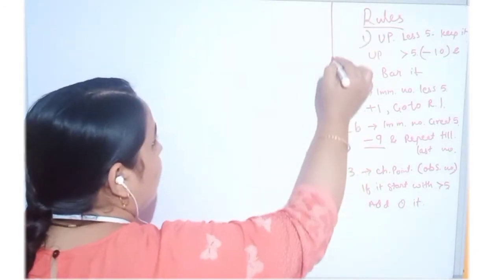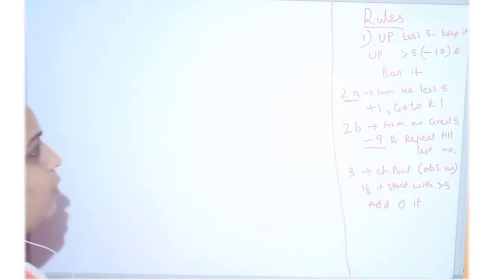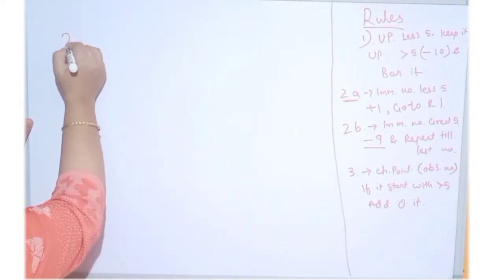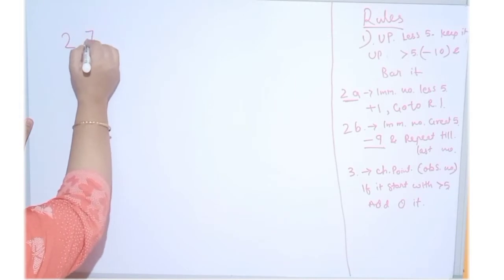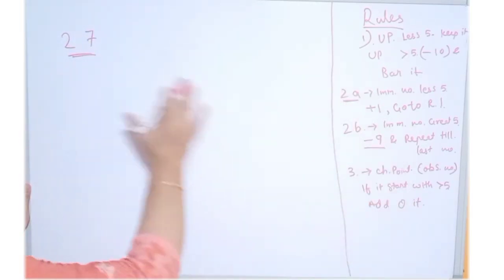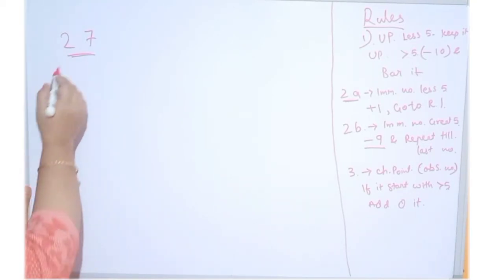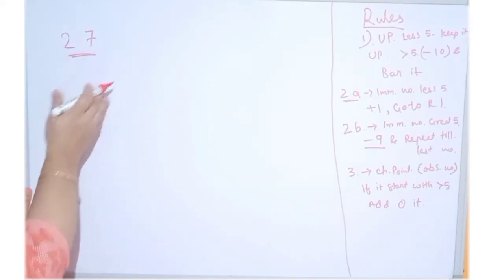I hope these rules are clear to you. Now we will understand how to convert and what benefits we get. This is the normal number. We will implement this formula and understand how this affects. Now we will observe this.